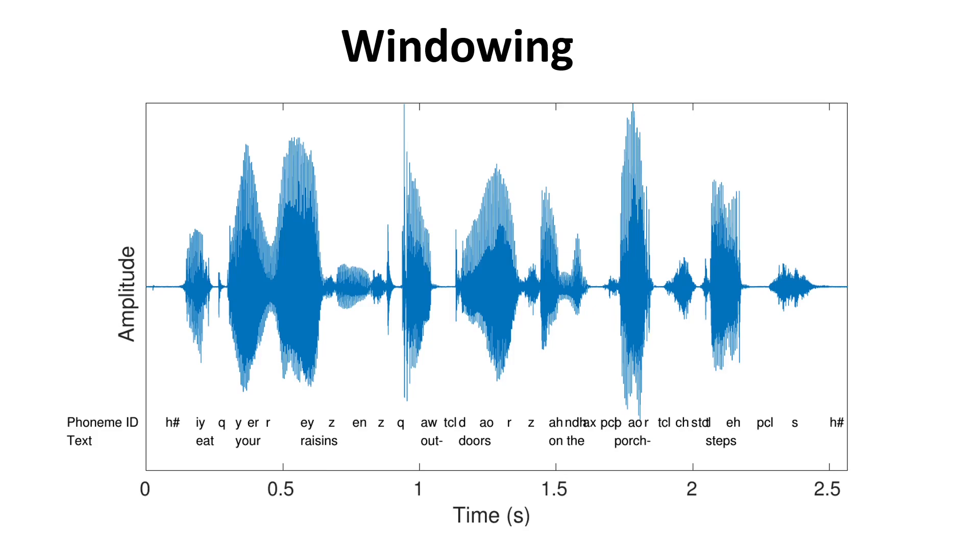The first one is windowing. So given a sample audio as input, the first step in computing the MFCCs is to window it on the temporal dimension and apply the Fourier transform on each window instead of the whole signal.